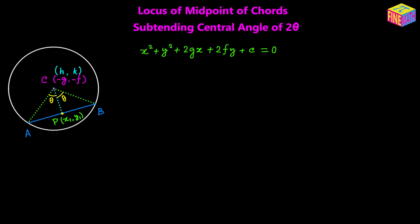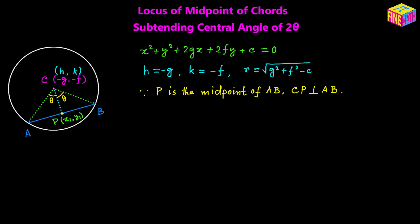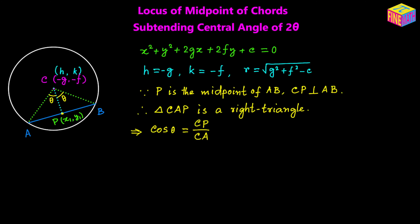If we assume the coordinates of the center to be h comma k, then h equals negative g and k equals negative f, and the radius of the given circle is square root of g squared plus f squared minus c. Since P is the midpoint of a chord, line segment CP is perpendicular to AB. In the right triangle CAP, the angle CPA is the right angle, so cosine of theta equals the adjacent side CP over the hypotenuse CA, giving us CP equals r times cosine of theta, where r is the radius of the original circle.